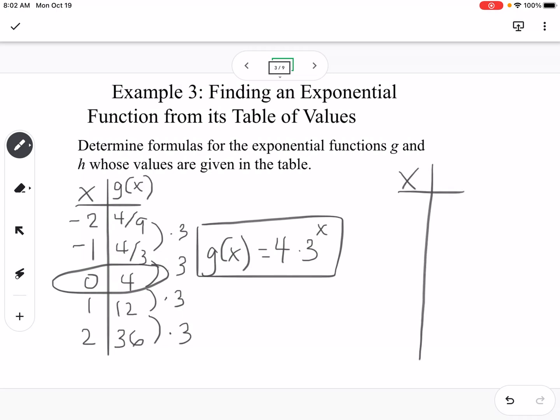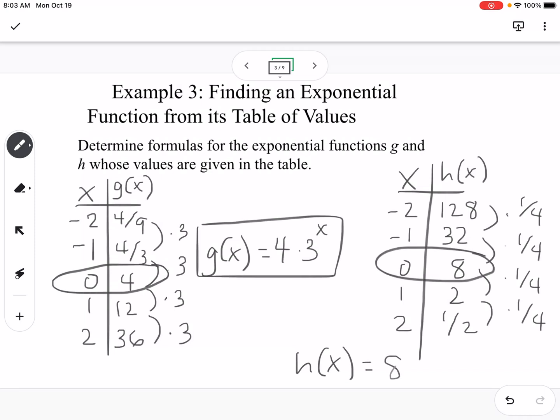So then our next table we're going to look at, we have 128, 32, 8, 2, and 1 half. So you can tell here, what are we multiplying by each time? It kind of looks like we're dividing, but we want to write it in terms of multiplication. So you can tell that we're multiplying by 1 fourth each time. So this function would be h of x equals our starting value, our y-intercept is 8 times 1 fourth to the x. So that would be how we write a function based on a table.